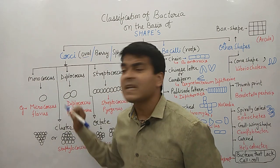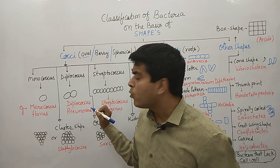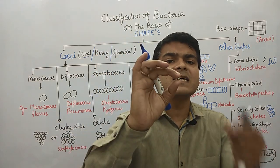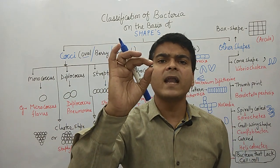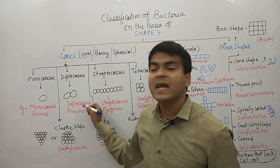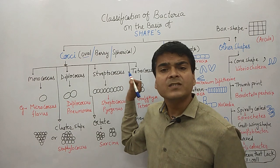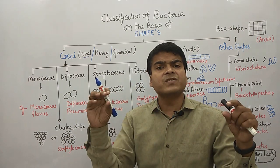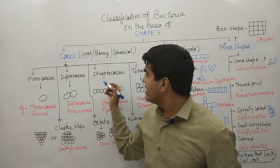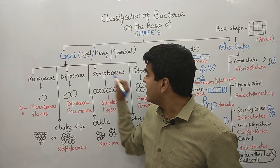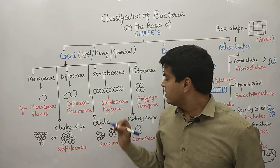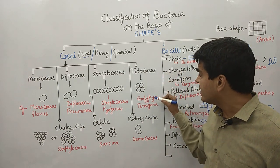Diplococcus is formed when two balls are attached to each other, like two spheres joined together. The example is Diplococcus pneumoniae. Streptococcus is a chain-like structure — multiple monococcus attached in a line. The example of streptococcus is Streptococcus pyogenes.